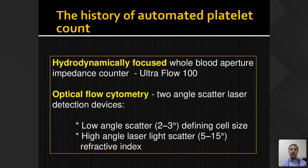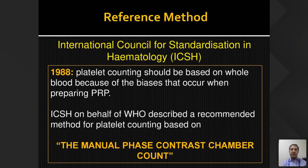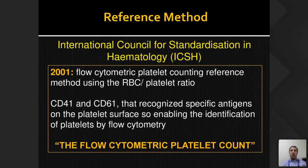The reference method as per the International Council for Standardization in Hematology (ICSH), given in 1988, clearly stated that platelet counting should be based on whole blood — not platelet-rich plasma, which gives erroneous counts. The method of choice was manual phase contrast chamber counting. The current reference method, established in 2001, is flow cytometry-based platelet counting using the RBC-to-platelet ratio, where CD41 and CD61 identify specific antigens on platelets for flow cytometry identification.